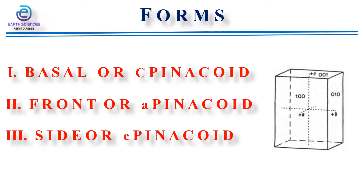We will now study the forms present in the barite type class. The first form is the basal pinacoid, also known as the c pinacoid. A face parallel to both horizontal axes demands the presence of a parallel face at the other end of the vertical axis. This open form is the basal pinacoid, with symbols for the two faces being (001) above and (00-1) for the face below.